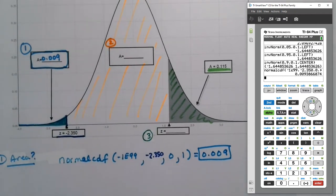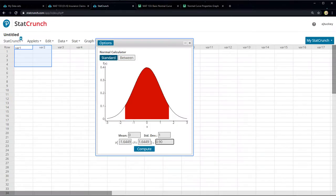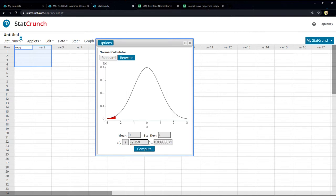Now what about StatCrunch? It would not be a between, so I'd click standard. Zero and one is fine. And then I would say negative 2.350 here, enter. And it tells me the area is 0.009.